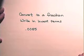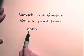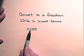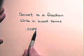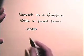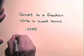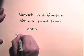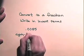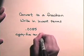Again, the easiest way to convert this to a fraction is to notice that this is the tenths, hundredths, thousandths, ten thousandths place. So, this decimal is 85 ten thousandths.